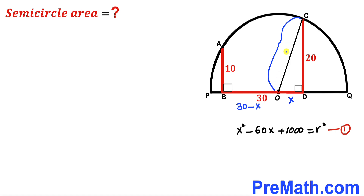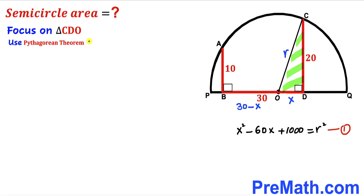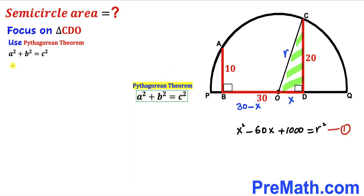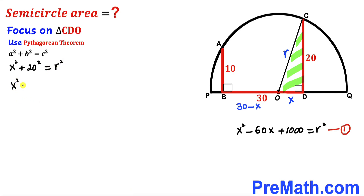OC is also the radius of this semicircle, labeled as lowercase r. We now focus on right triangle CDO and apply the Pythagorean theorem again: a² + b² = c². The hypotenuse is r, and the two legs are x and 20. So we get x² + 20² = r², which simplifies to x² + 400 = r².